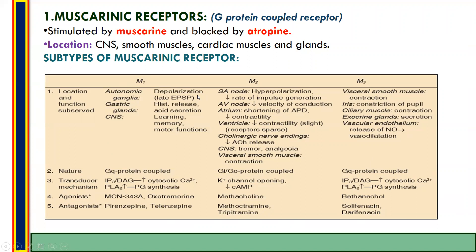Among M1 through M5, the subtypes M1, M2, and M3 are the most important. M1 is also called the neuronal receptor because it is primarily located in the CNS. At autonomic ganglia it causes depolarization — generation of excitatory postsynaptic potential (EPSP). At gastric glands it causes release of histamine and acid secretion. In the CNS it is involved in learning, memory, and motor function.